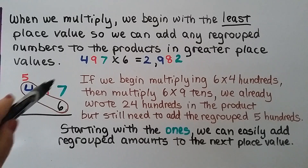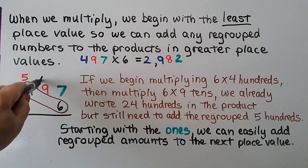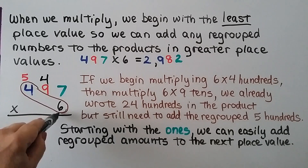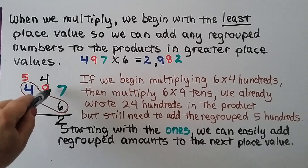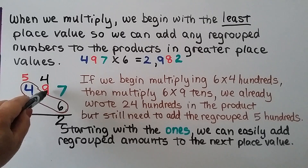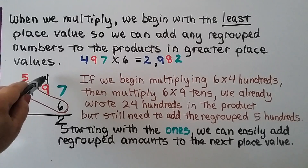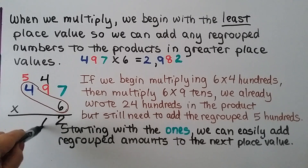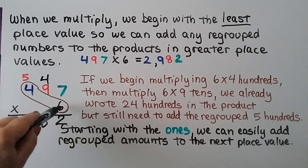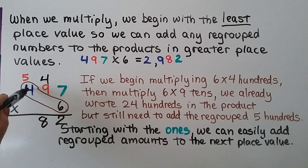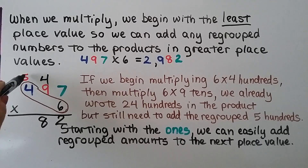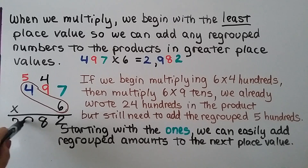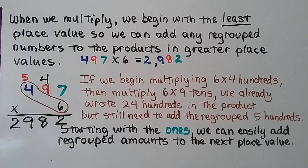We would start with the ones place. Six times seven is 42 — we regroup the four, write the two. Six times nine is 54, plus four is 58 — write the eight. Six times four is 24, plus five is 29. We get our 2,982. Start with the ones place.